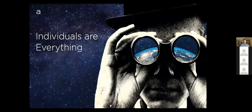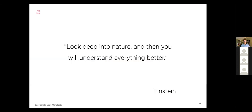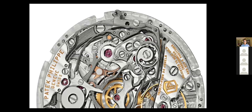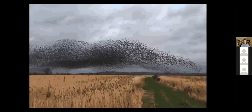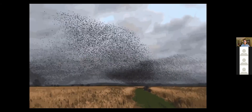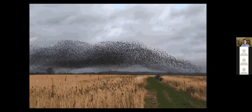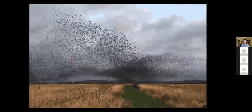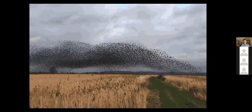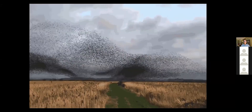Individuals are absolutely everything. Einstein said, 'Look deep into nature and you'll understand everything better.' A great way to categorize our thinking is to look at the difference between complicated and complex. Something complicated, like a watch movement, has lots of moving parts — hard to understand, but once you figure it out, you know exactly what's going to happen. Something complex has an element of the unknown, risk, and uncertainty. A better example of complex is a murmuration of starlings — lots of moving parts, but you never know where it's going to go next. The birds themselves don't know. This is a self-organizing system.